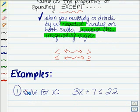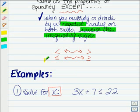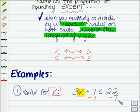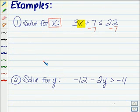In fact, let's look at a couple of examples. In our first example here, we want to solve for x. So we want to get our variable x all by itself. Now in order to do this, let's start by subtracting 7 from both sides of our inequality. When we do that, that's going to result in 3x is less than or equal to 22 minus 7 is 15.